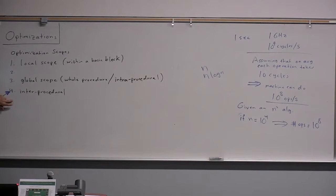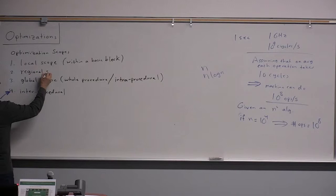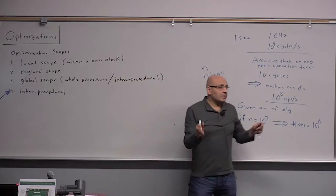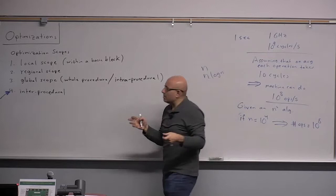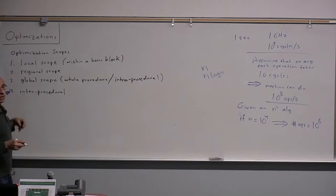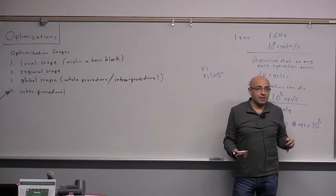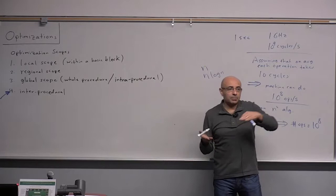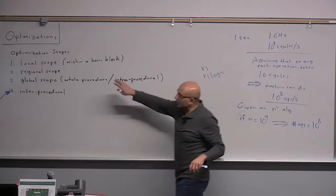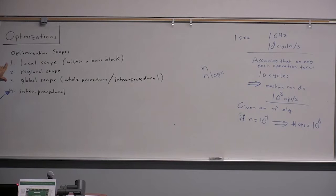We have local scope, global scope, and inter-procedural scope. Between local and global, we have regional scope. Sometimes an optimization may not work on the entire function but may divide the function into multiple regions, where each region has multiple basic blocks. This is sometimes done with register allocation — if the function is too big, the register allocator may divide it into multiple regions. Some optimizations operate on a region larger than a basic block but smaller than a whole function.